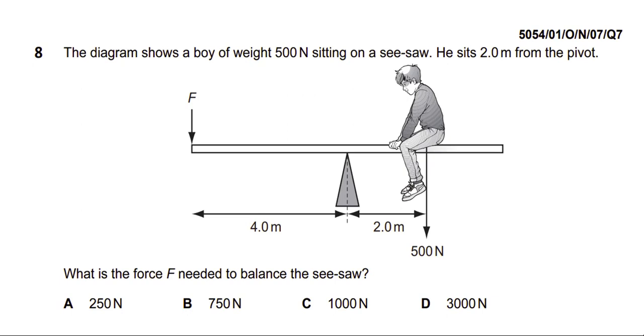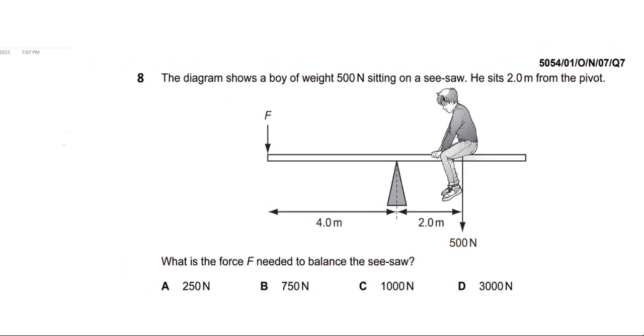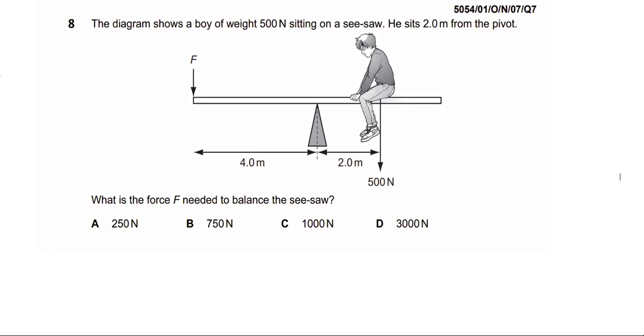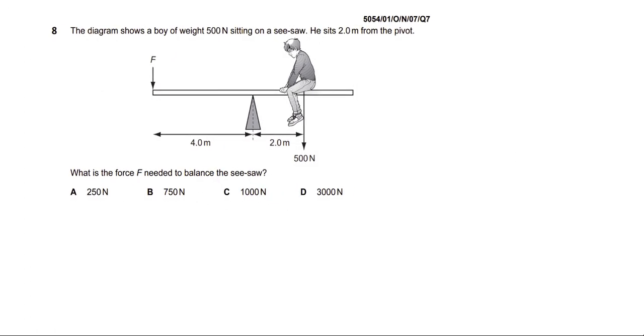Today we have a physics O-level P1 question. Let's start solving it. The examiner asks us: The diagram shows a boy of weight 500 Newton sitting on a see-saw. He sits 2.0m from the pivot. What is the force F needed to balance the see-saw? What do we first do with this question?